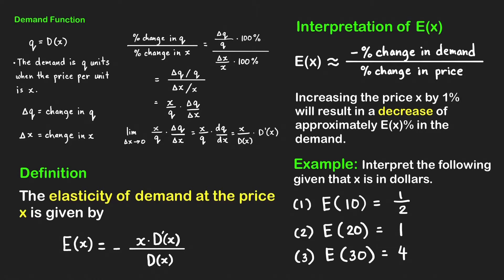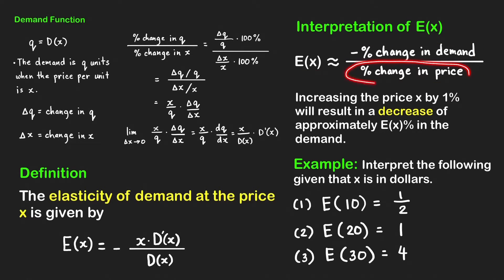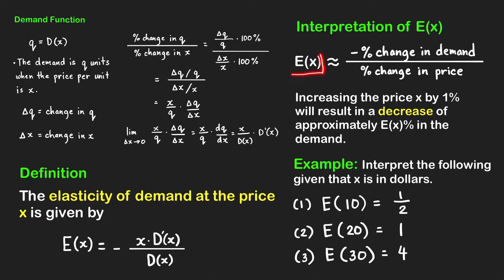How do we interpret e of x? From our derivation, the negative of e of x equals the percent change in q over the percent change in x. Keep in mind that we took the limit as delta x approaches zero, so e of x approximates the negative percent change in demand over the percent change in price. This means that if the percent change in price is one percent, then the negative percent change in demand equals the value of our elasticity function. Therefore, a correct interpretation is: increasing the price x by one percent will result in a decrease of approximately e of x percent in the demand.